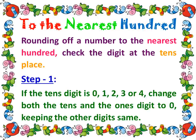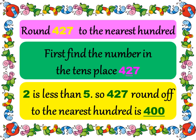Next, let us recall rounding off numbers to the nearest 100. For rounding off numbers to the nearest 100, check the digit at the 10's place. Step 1: If the 10's digit is 0, 1, 2, 3, or 4 — that is, less than 5 — change both the 10's and 1's digit to 0, keeping the other digits the same. For example, round 427 to the nearest 100. The digit in the 10's place is 2, which is less than 5, so 427 rounded off to the nearest 100 is 400.